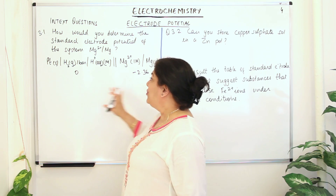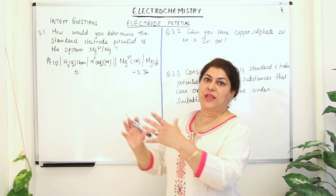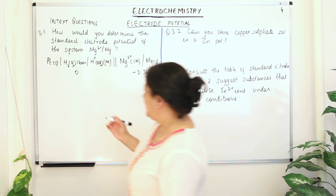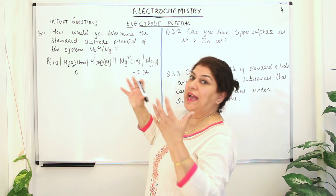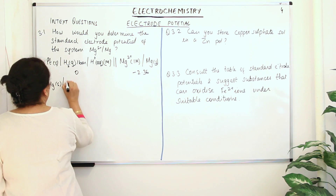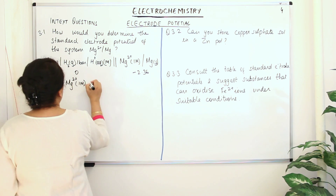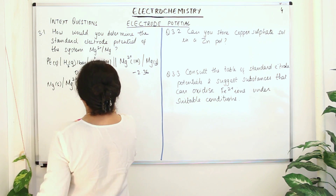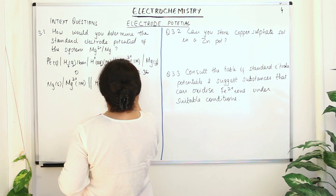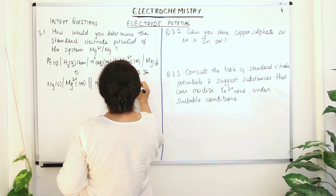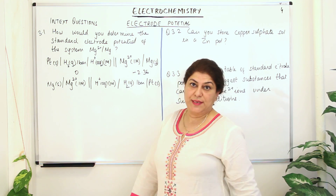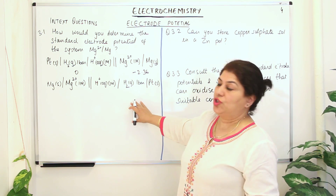Now assuming you've carried out the experiment and found out this value, you will learn that magnesium is forming the anode. So you would then represent the cell as: Mg(s) | Mg²⁺(1 M) || H⁺(aq, 1 M) | H₂(g, 1 bar) | Pt(s), going in the reverse direction — H⁺ was in aqueous one-molar solution and hydrogen H₂ gas at one bar is in the reduced form, with platinum as the electrode surface.